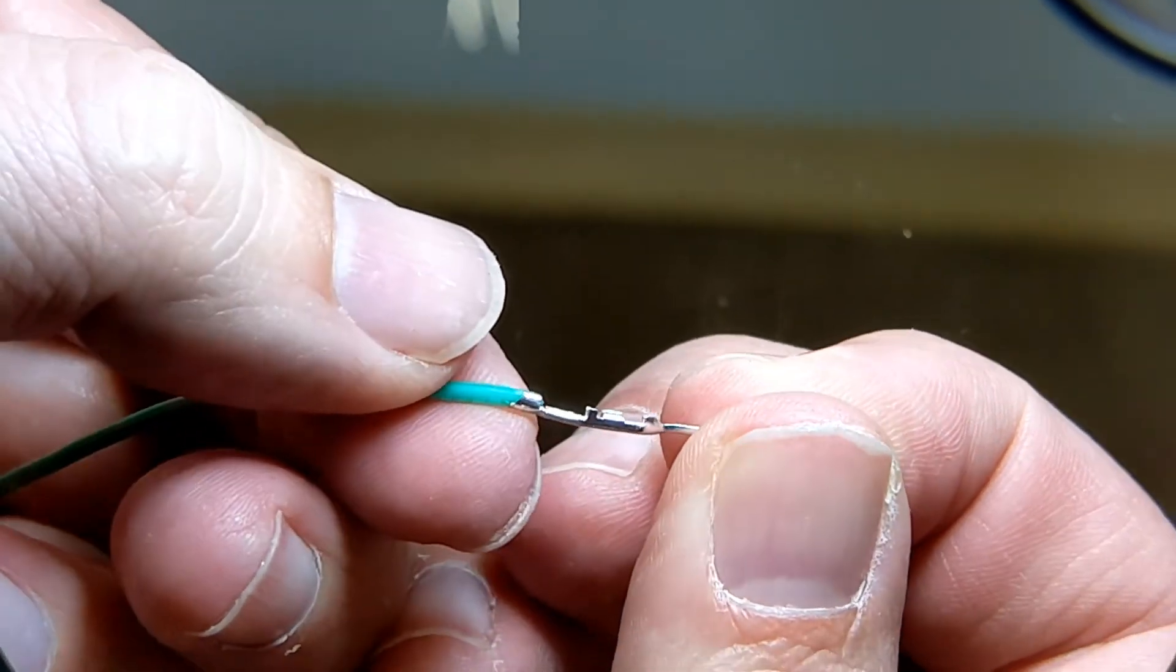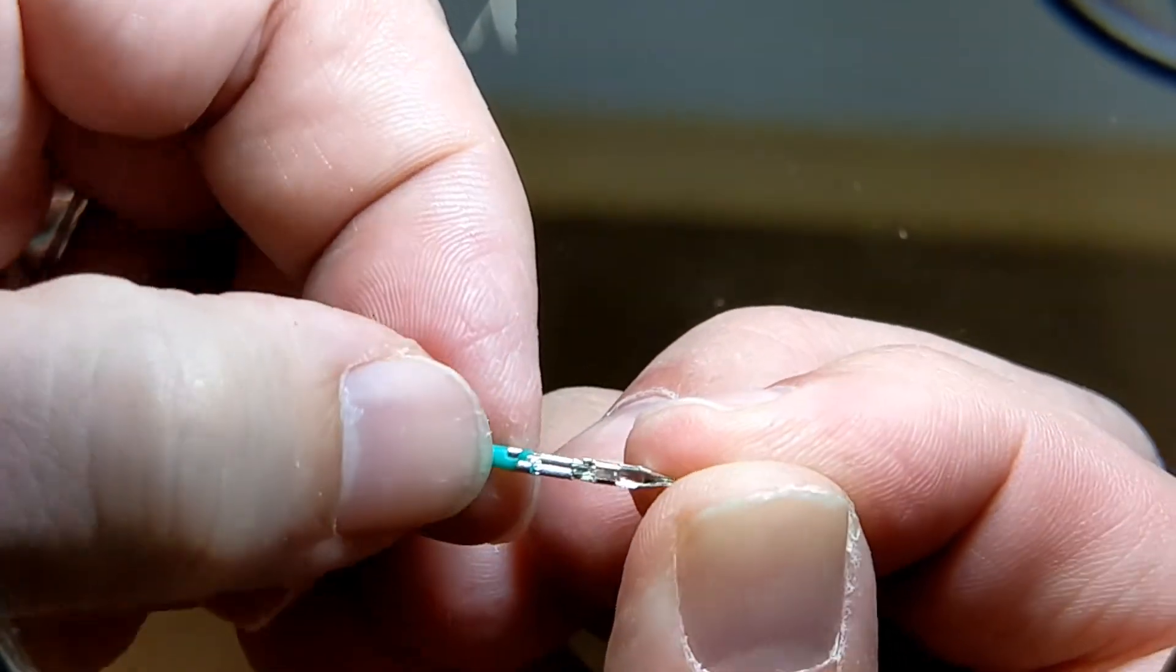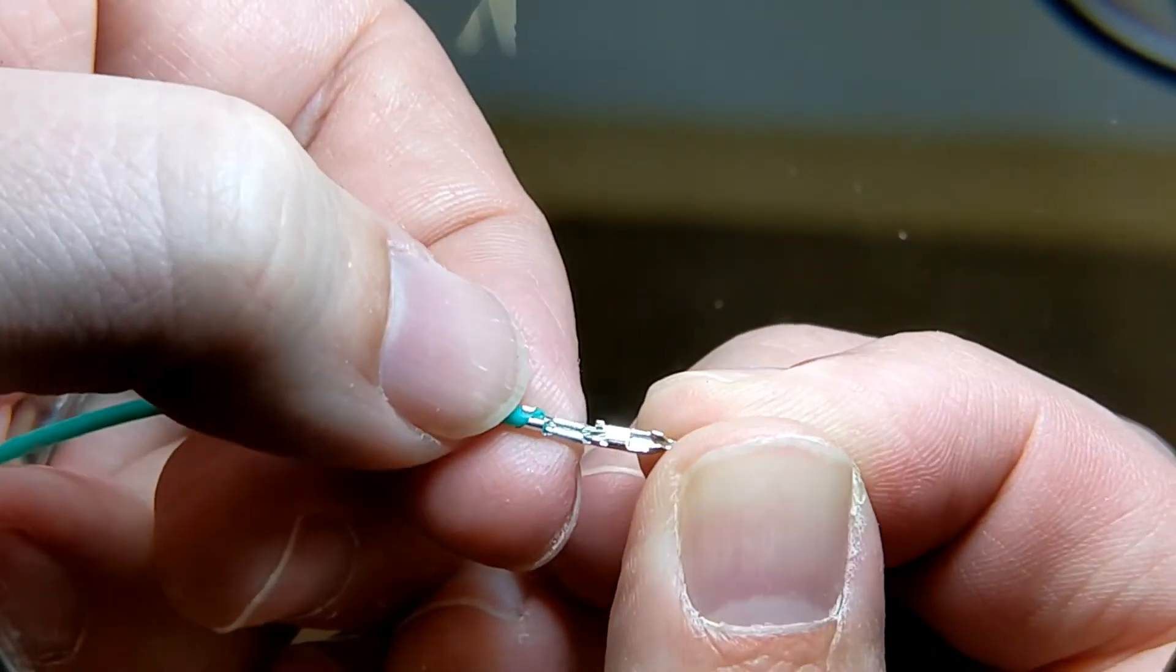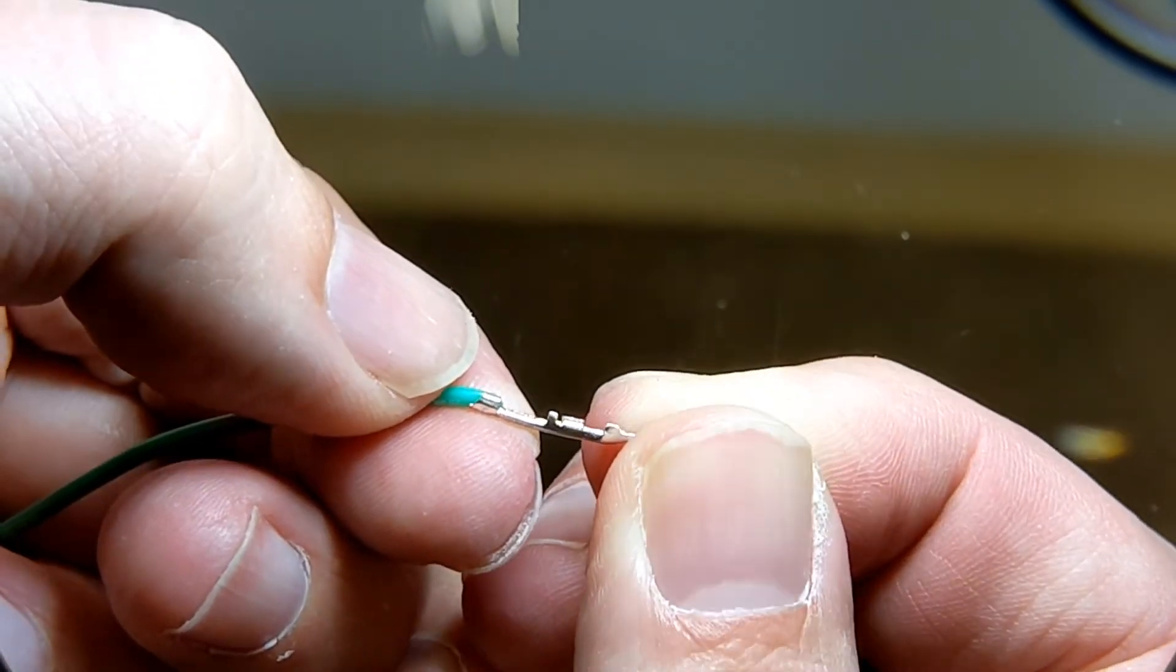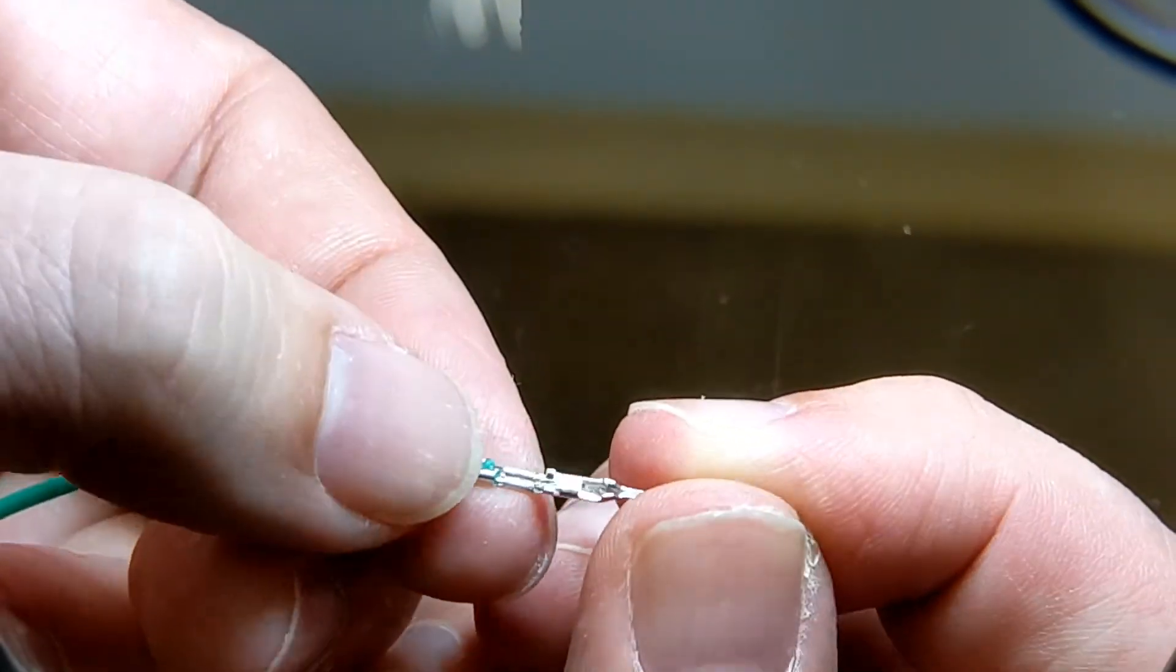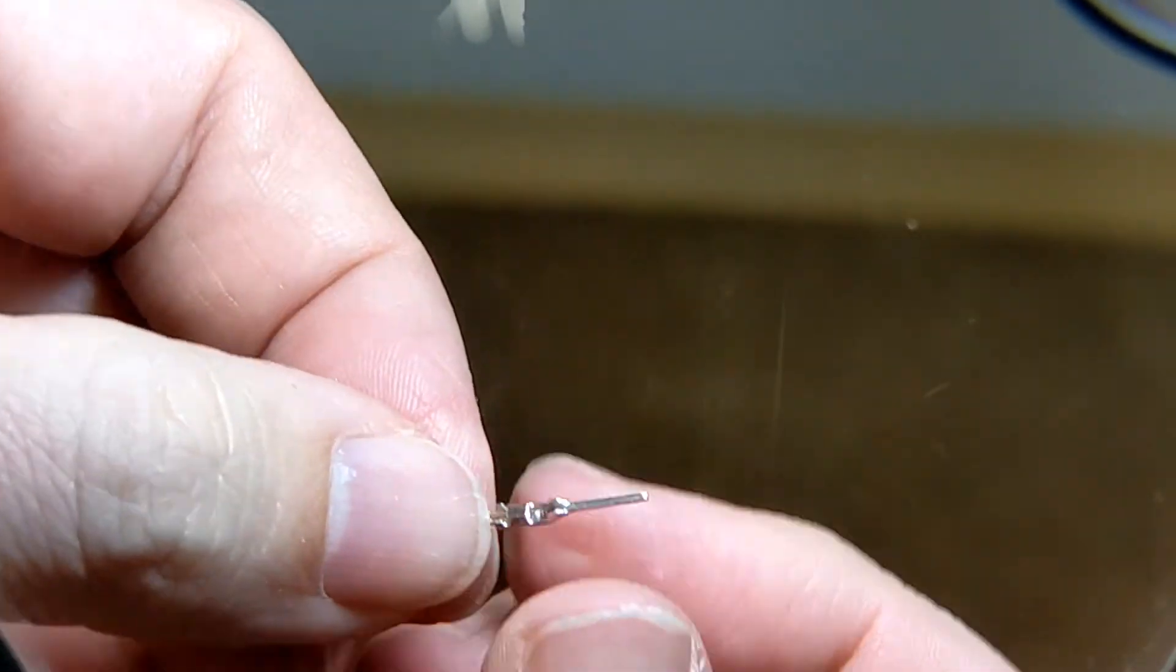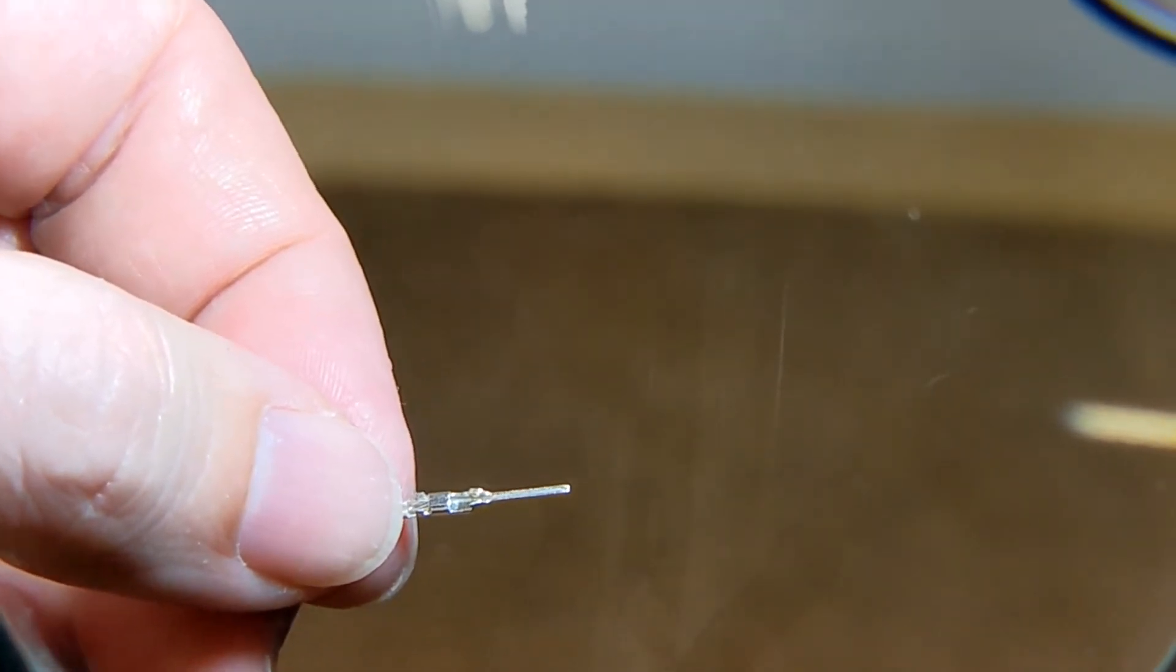You can see now that we've crimped the first crimp on the insulation, the second crimp on the bare wire. And those tiny little tabs are still sitting nice and proud. So with this, we should have no problem inserting this into one of the housings.